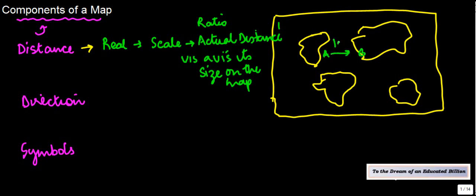And the distance between them is 1000 kilometers. Now the distance between them, the actual distance on Earth, may be 1000 kilometers, but on the map it might be shown as one centimeter. So we say that the map has a scale of 1000 kilometers to one centimeter.